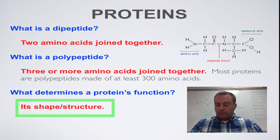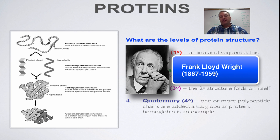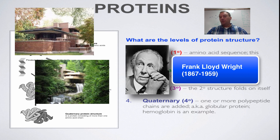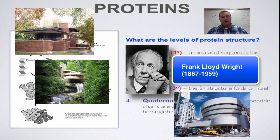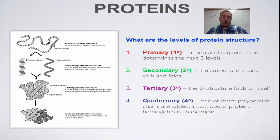Proteins have a three-dimensional structure, and their shape determines their function. A great way to remember that is to think of famous 20th century American architect Frank Lloyd Wright. Think of his prairie houses in the Chicago area, his famous house Falling Water, and the Guggenheim Art Museum in New York. Frank had a saying: form follows function — the shape of a building was determined by what it was supposed to do. That applies to proteins because its shape will determine its function.